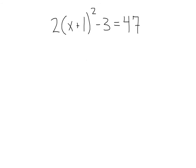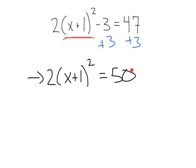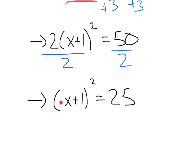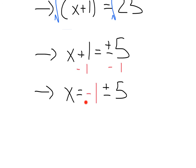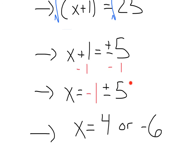For this one, we want to solve for our squared term first — that's x plus 1 squared. We do that by adding 3 to each side, changing 47 to 50, and then dividing each side by 2. We get x plus 1 squared equals 25. Taking the square root gives us x plus 1 equals plus or minus 5. Subtracting 1, x equals negative 1 plus or minus 5. Negative 1 plus 5 gives us 4, and negative 1 minus 5 gives us negative 6. And we've got our solutions.